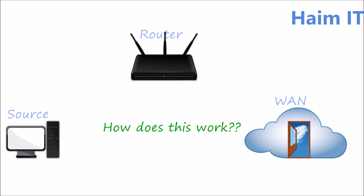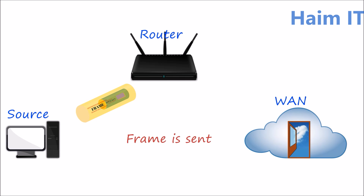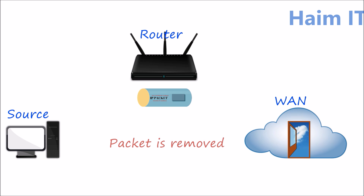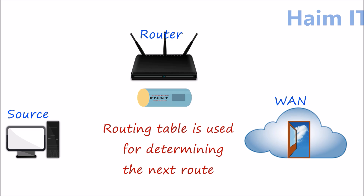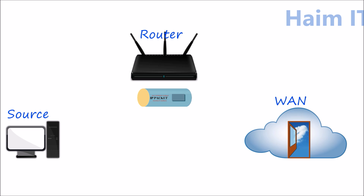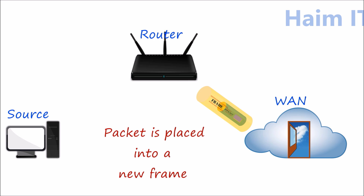So how does this work? When a frame reaches a router, the packet within the frame will be removed and its destination IP address will be compared against the router's routing table. The packet will then be placed into a new frame and sent on its way.